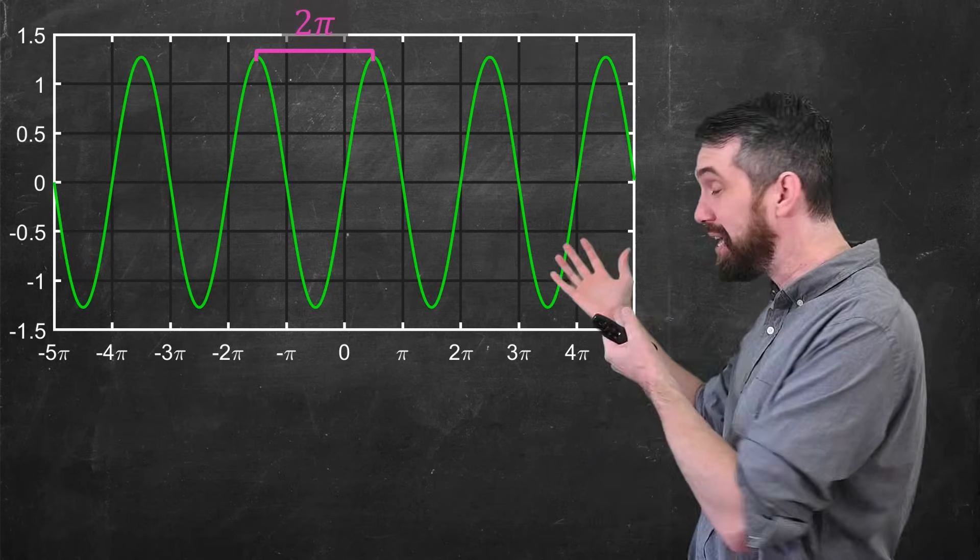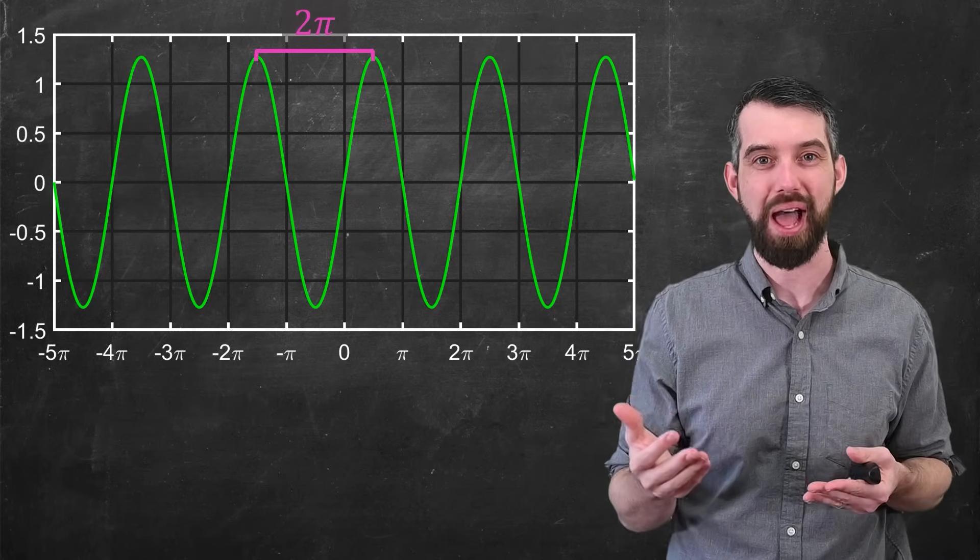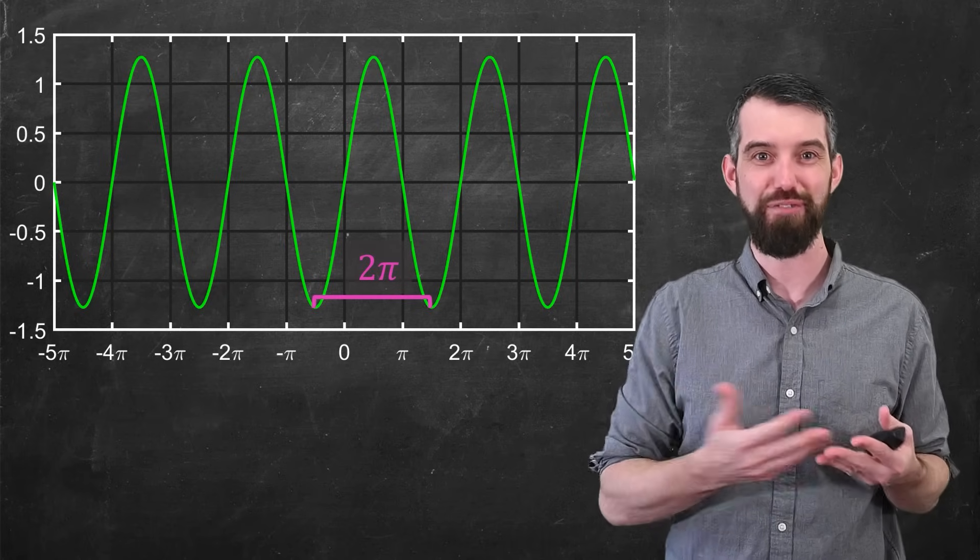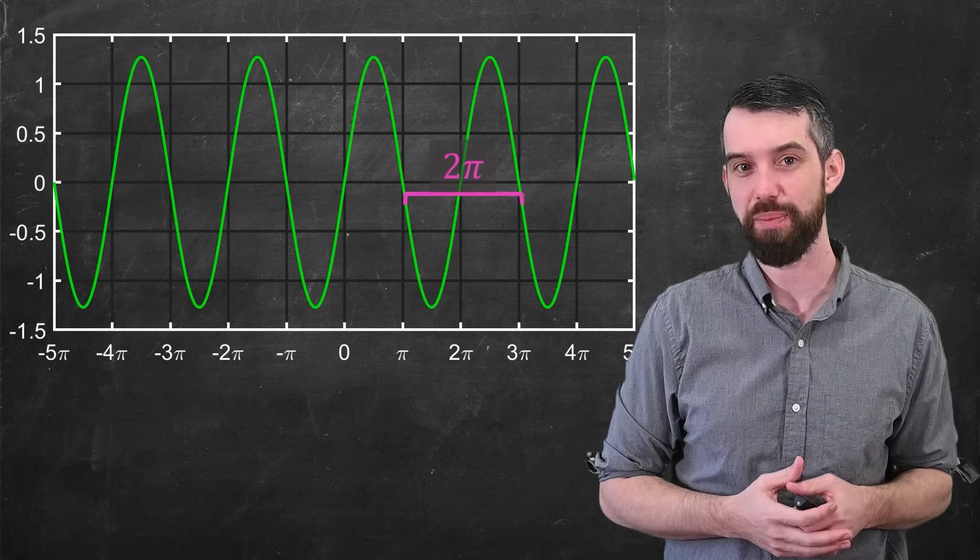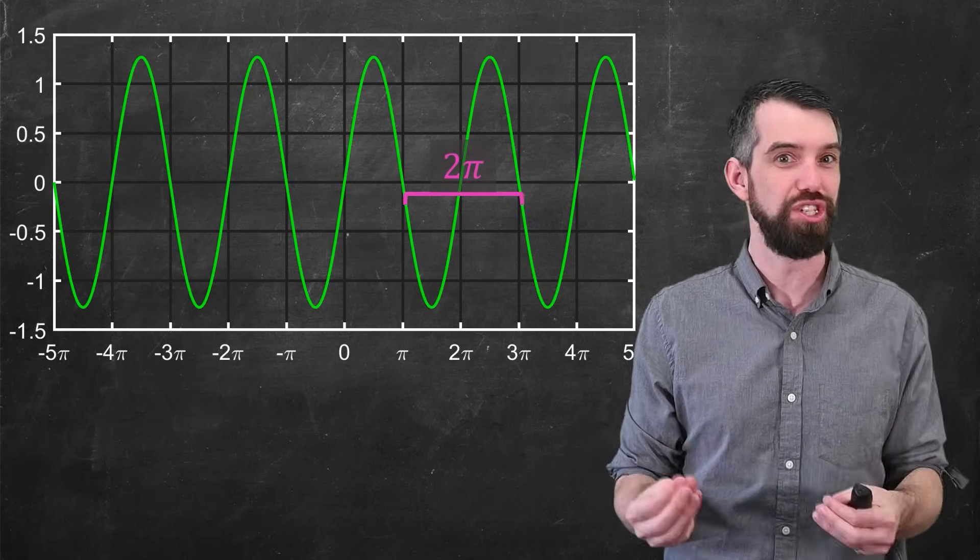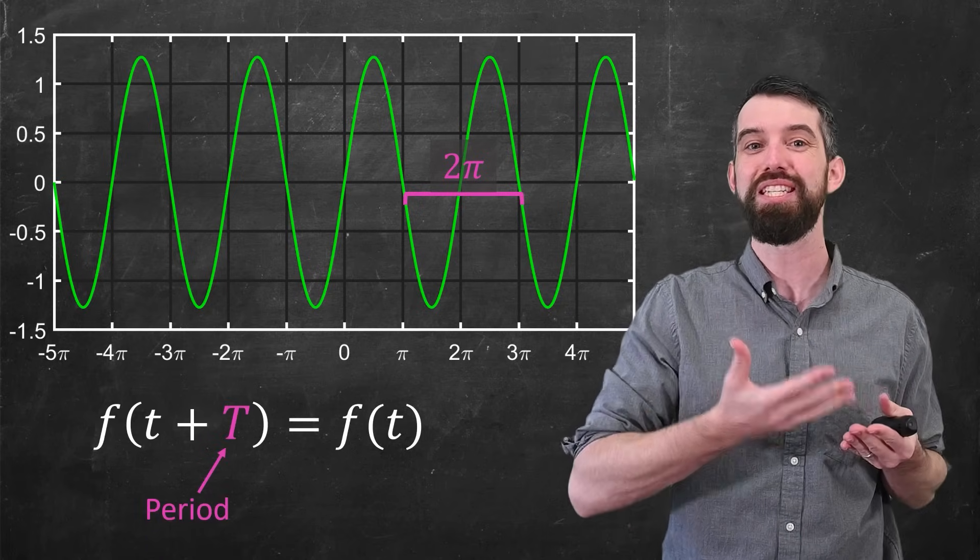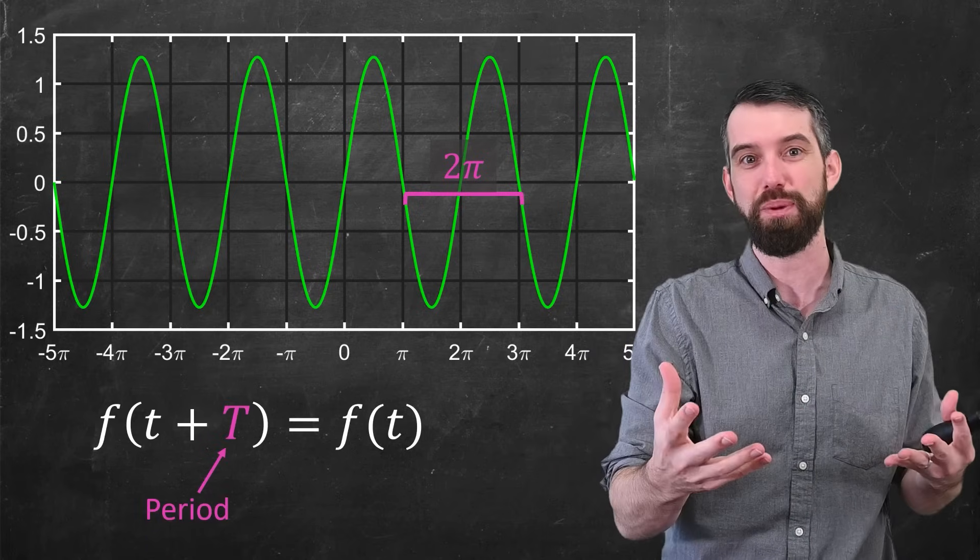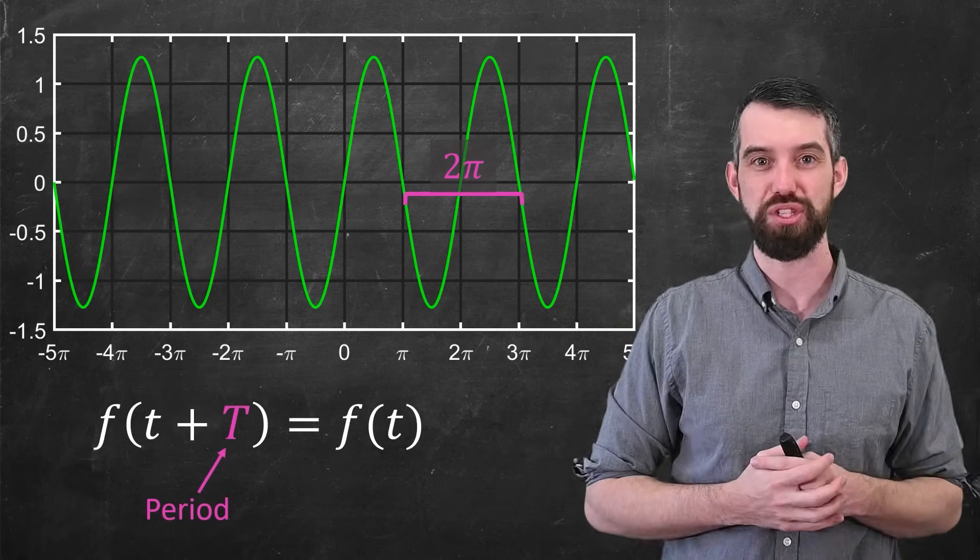So for instance, two consecutive peaks are separated by a distance of 2π, but wherever you go, if you move over 2π, you get to the exact same height. And so we define this as an example of a periodic function, which just means if you take f of t plus the period capital T, you just get back exactly where you started, f of t.